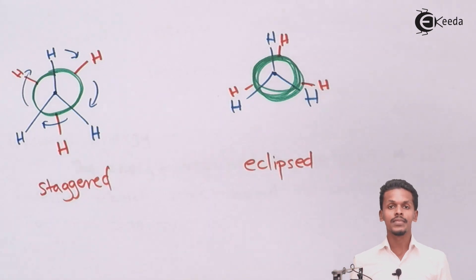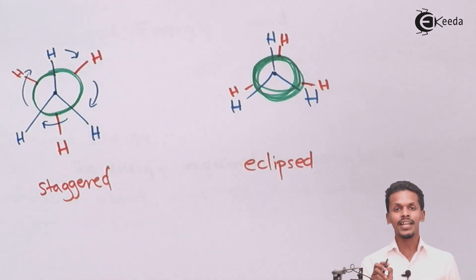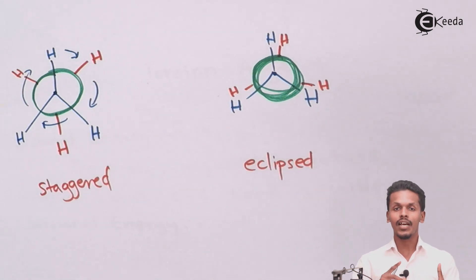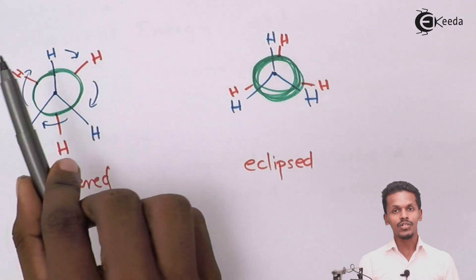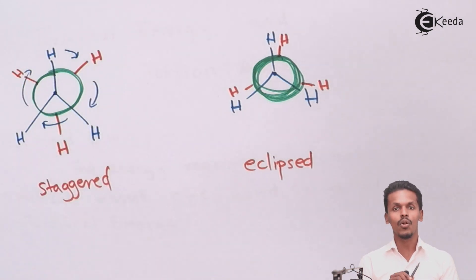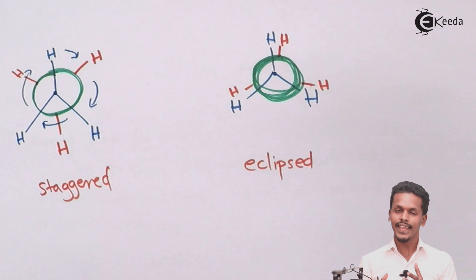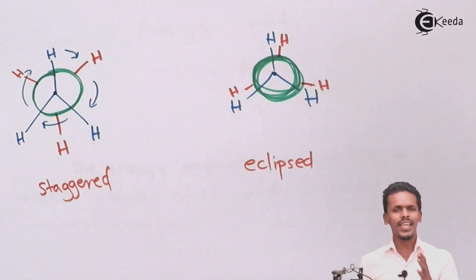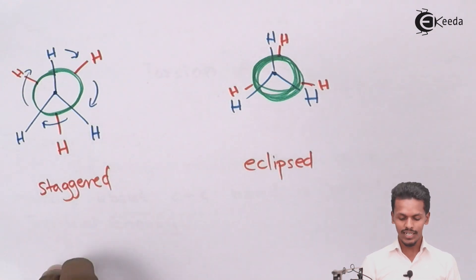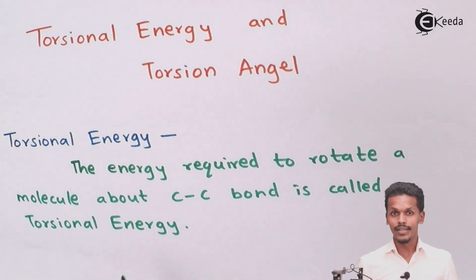When we use the Sawhorse projection, we can easily see the carbon-carbon bond. From there, we can analyze that if rotation takes place on that axis, the angle between the hydrogens will also change. The energy required to rotate one carbon to make a particular angle is known as torsional energy.